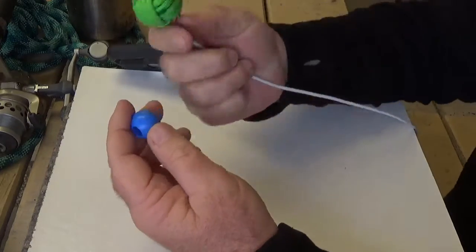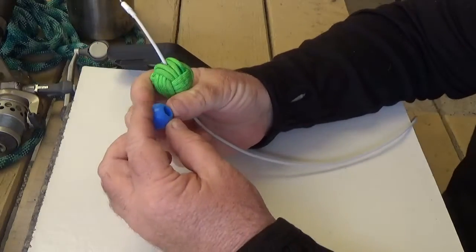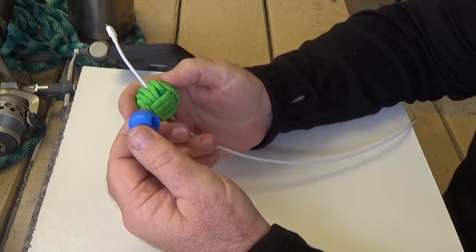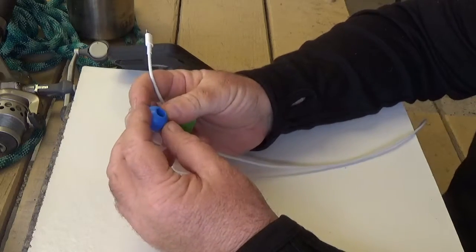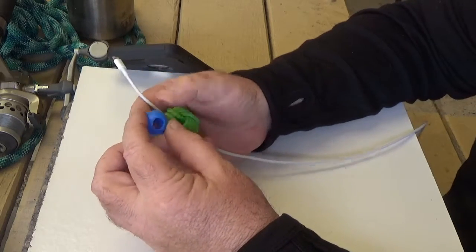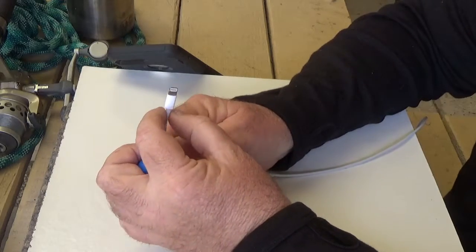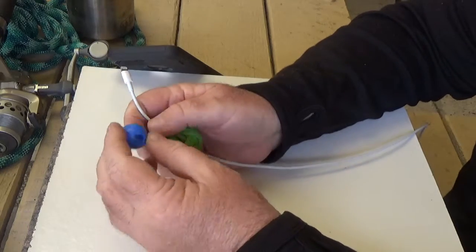So the center of the monkey fist is just a plastic bead that came off a fascinator from a pram. Now the plug itself across here measures 8mm, so I drilled a 9mm hole.